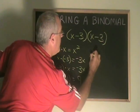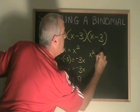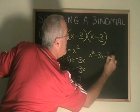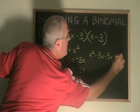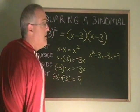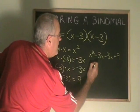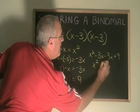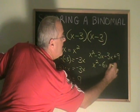x squared minus 3x minus 3x plus 9 has two similar terms in the middle, minus 3x and minus 3x. This simplifies to x squared minus 6x plus 9.